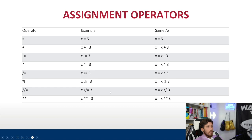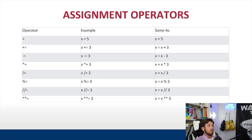Let's move on to assignment operators. The single equals sign sets a variable to a value — so x = 5 means x equals 5. Plus-equals means x += 3 is x plus 3. Minus-equals is x minus 3. Times-equals, divide-equals, modulus-equals, floor-equals, and exponent-equals all work the same way — they're shorthand for performing the operation and reassigning the result back to the variable. Let's go over some examples in the notebook.